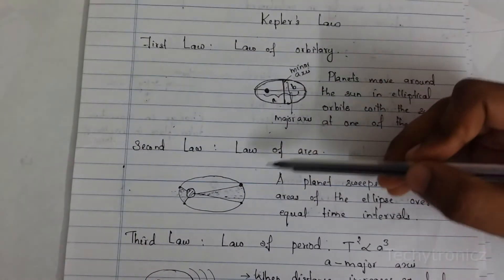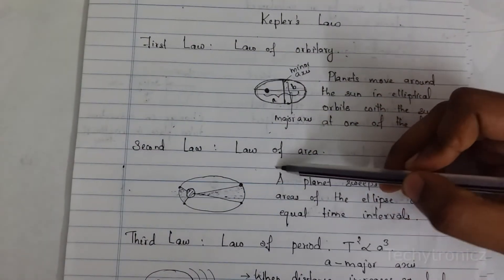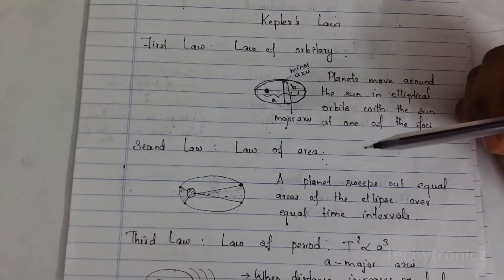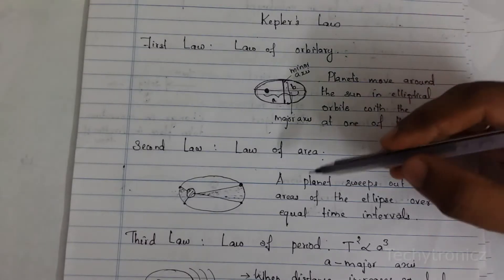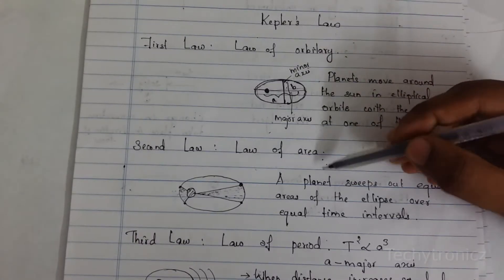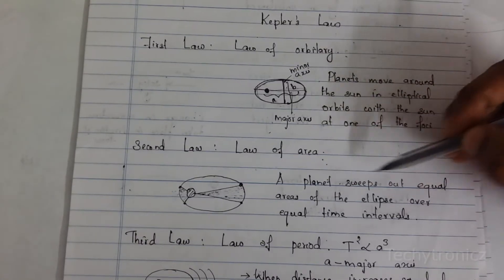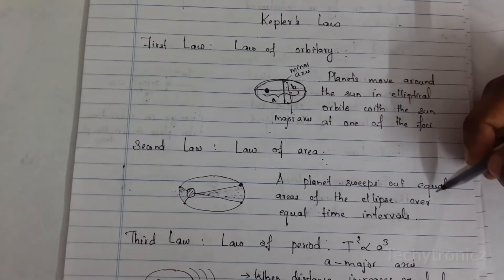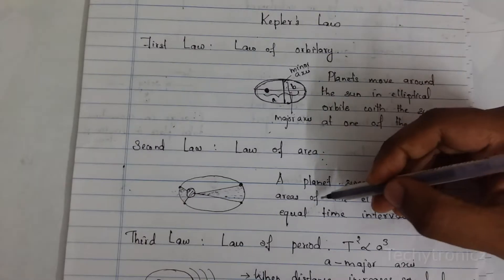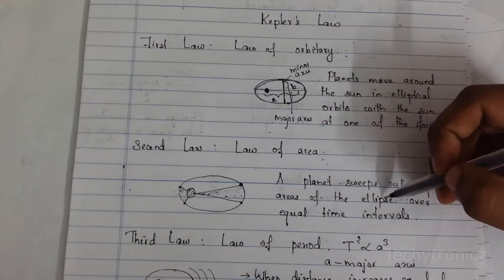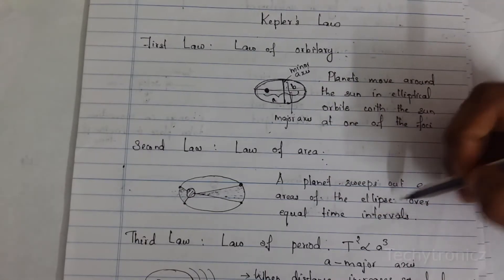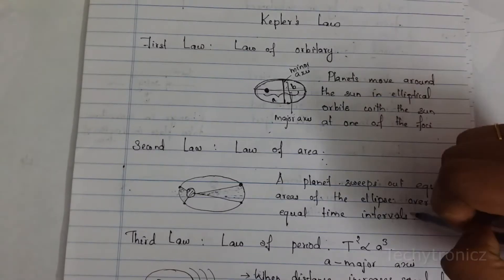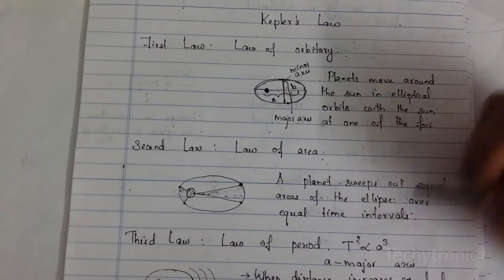The second law is the law of area. The law states that a planet sweeps out equal areas of the ellipse over equal time intervals.